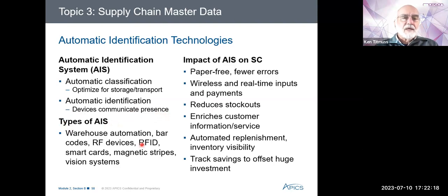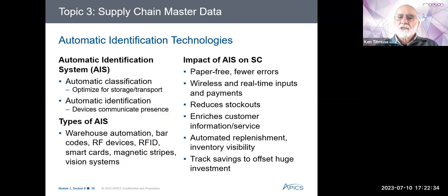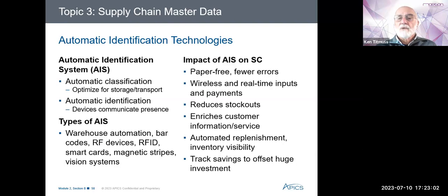Types of AIS include warehouse automation. We've spoken about barcodes, RF devices, RFID devices, smart cards, magnetic strips, and vision systems. Warehouse automation systems direct picking and putting away. A wireless radio terminal directs employees where to go next. Synthesized voice is a hands-free version — voice picking. Pick-to-lights is another technology used in the warehouse that highlights a path through the warehouse.